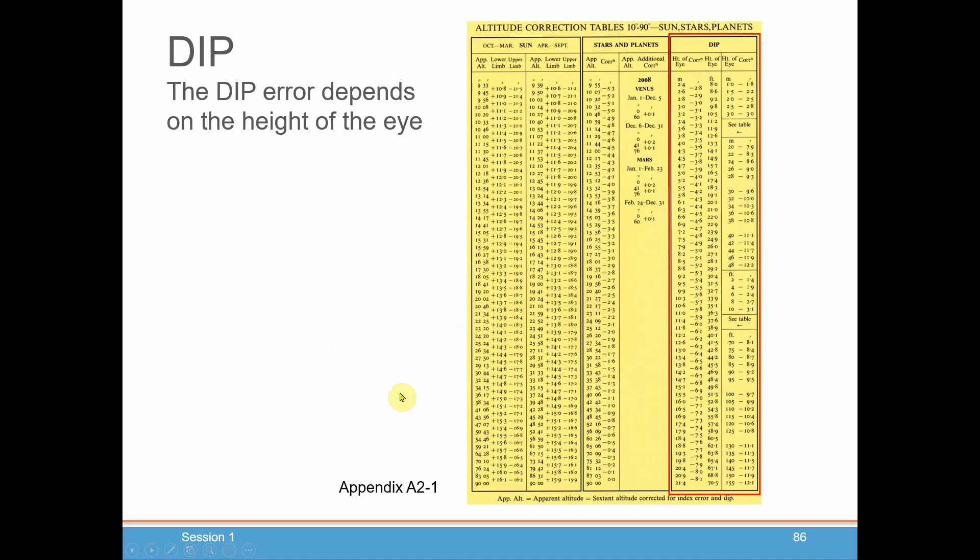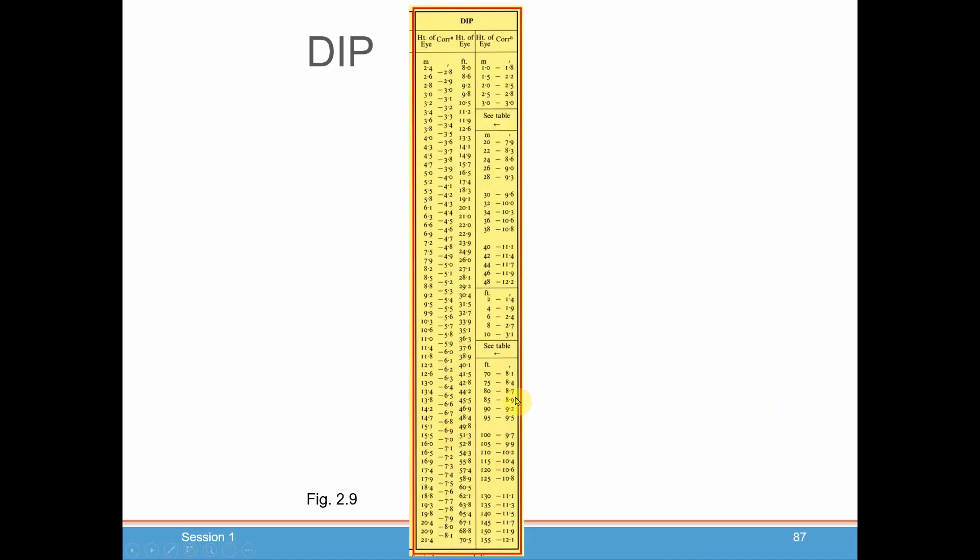And this is what the table looks like in the Nautical Almanac. This is usually on a nice little card that comes with your Almanac that you can stick in the Almanac as a bookmark. And the dip corrections will be over here on the right hand side. So it kind of looks like this.